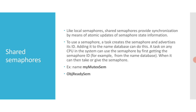To use a shared semaphore, a task creates the semaphore and advertises its ID by adding it to the name database. A task on any CPU in the system can use the semaphore by first getting the semaphore ID — for example, from the name database. When it has the ID, it can then take or give the semaphore.